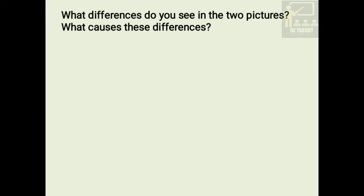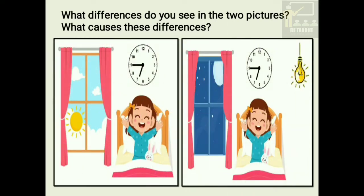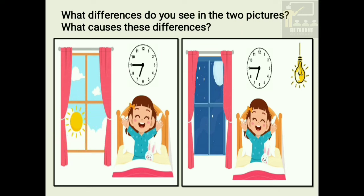Now what differences do you see in the two pictures? What causes these differences? Let us observe and study the cause for these differences. In the first picture, it is morning 6:45 AM. As you can see the time shown in the clock, as the sun rises, we get light from the sun. Therefore, we can see the things around us.